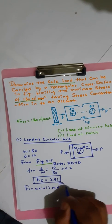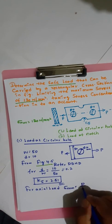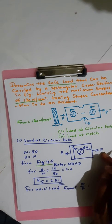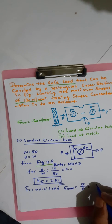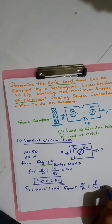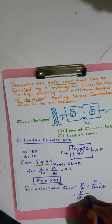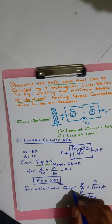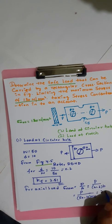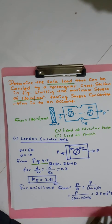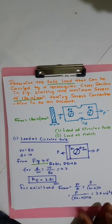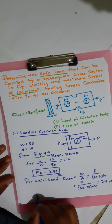For axial load, sigma_nominal = P/A. The net area A = (W − d) × h = (50 − 10) × 10 = 400 mm², so sigma_nominal = P/400 = 2.5 × 10⁻³ × P.